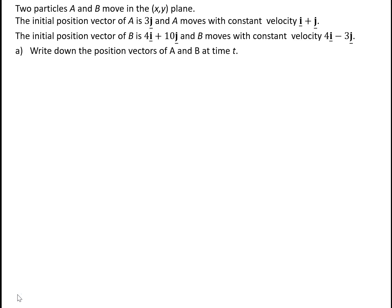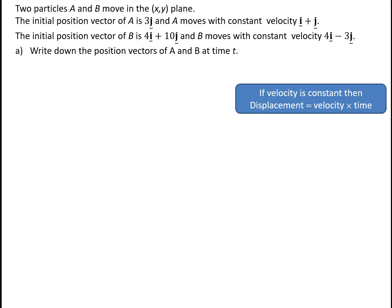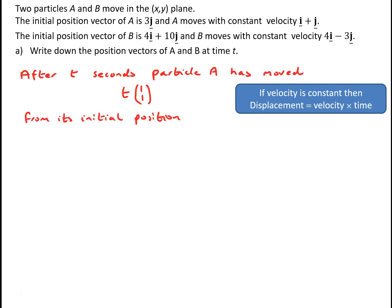The first thing we've got to do is write down the position vectors of A and B at time t. If the velocity of A is constant, then the displacement of A during a time t is simply going to be t times the velocity — displacement equals velocity times time, provided the velocity is constant. So in this case, in time t, particle A will have moved by t times the vector (1, 1) from its initial position.